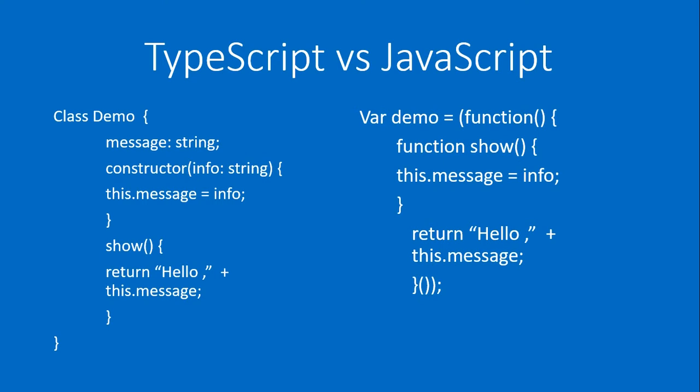Now for the JavaScript equivalent: I am creating a variable called 'demo' and calling an anonymous function inside it. Within that anonymous function, I call a function called 'show', set 'this.message' equal to 'info', and return 'hello' plus 'this.message'. This is the difference between JavaScript and TypeScript.